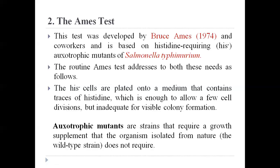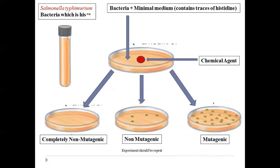The histidine-minus cells are plated onto a medium that contains only traces of histidine — enough to allow a few cell divisions but inadequate for visible colony formation. Histidine-minus means only the histidine gene in Salmonella is mutated, so without histidine they will not develop colonies. This is the basis of the test to check whether a chemical has a mutagenic effect.